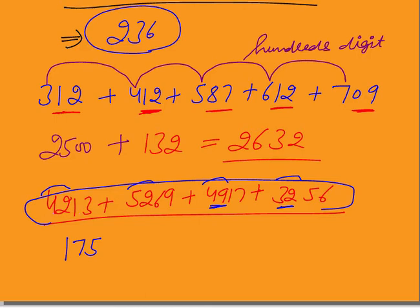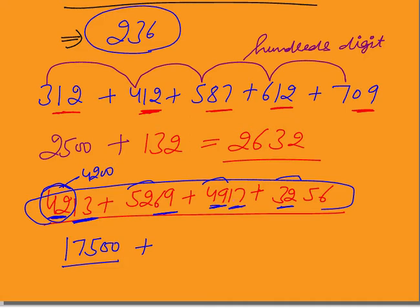This gives 175 hundred, because 42 stands for 4200, 52 for 5200, and 49 for 4900 — so the result is 17,500. Now add the last two digits: 13 plus 69 plus 17 plus 56. Add 69 plus 3 to get 72, plus 10 is 82. 82 plus 17 is 99. 99 plus 56 is 155. Adding everything together gives 17,655.